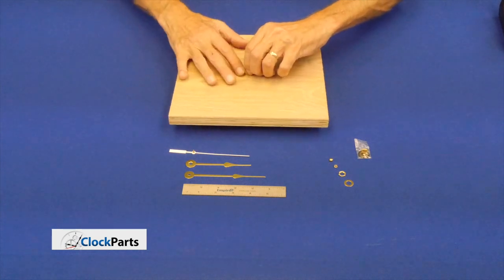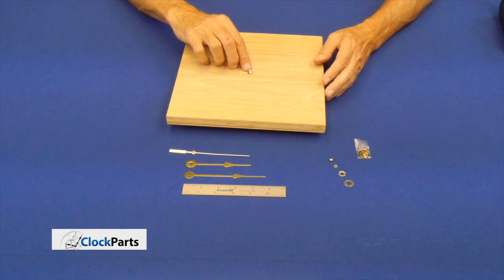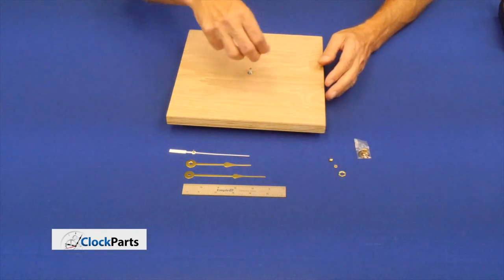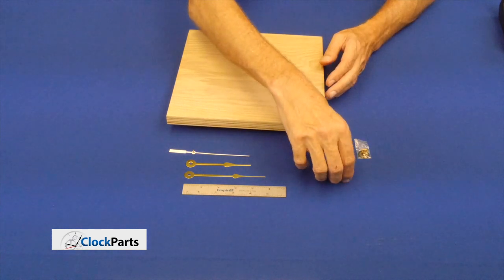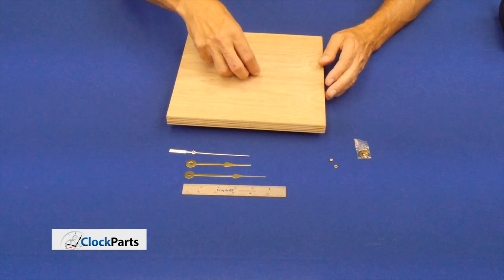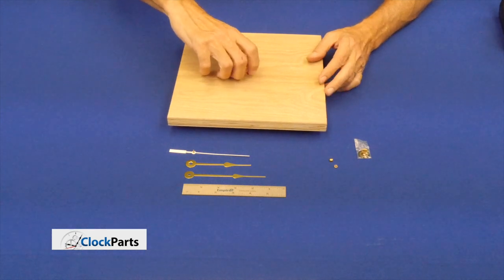As you can see, we selected the right movement because we have about an eighth of an inch there to put the brass washer on. This is how we secure the clock motor to the dial material. Then I take that brass nut and just spin it down.